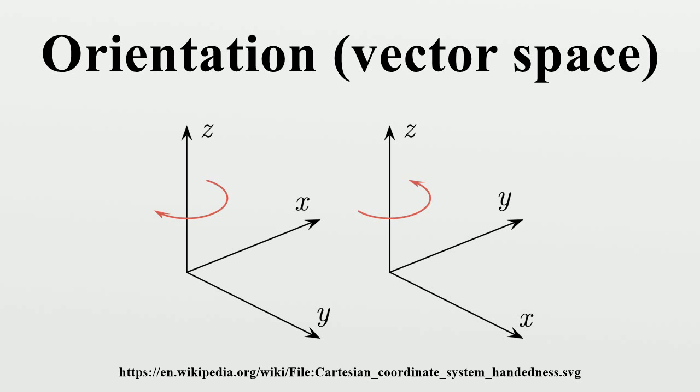For example, the standard basis on Rn provides a standard orientation on Rn. Any choice of a linear isomorphism between V and Rn will then provide an orientation on V.